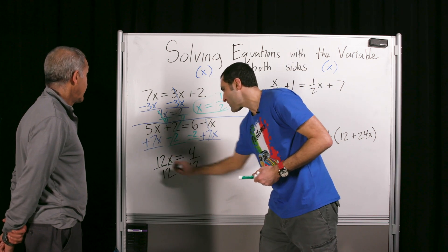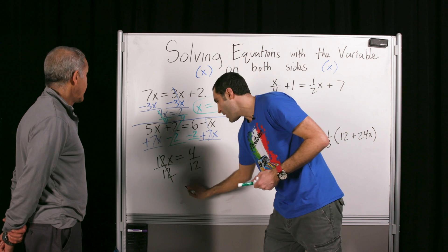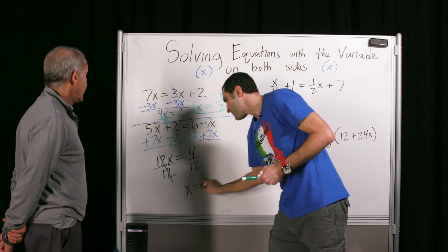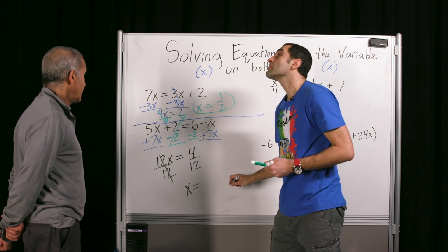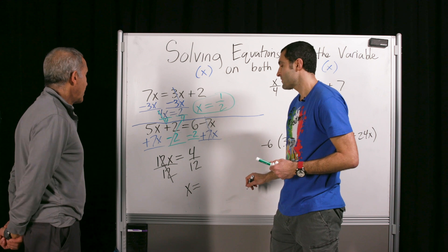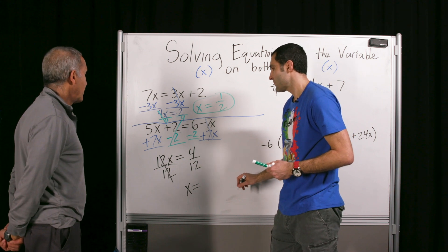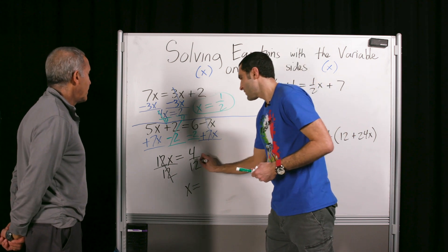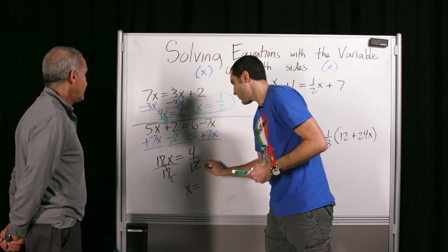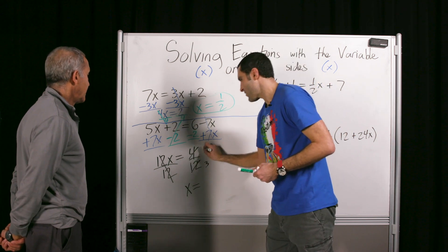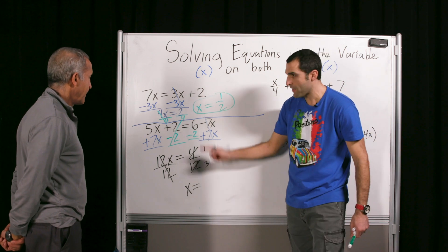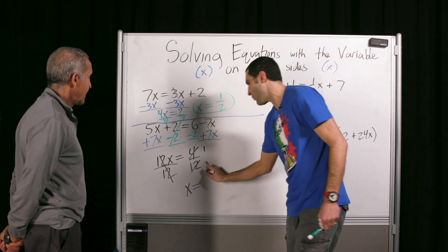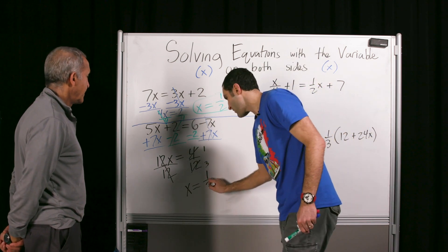And four twelfths simplifies to what? Three over four? No, try again. Divide by four. Twelve by four is three. One over three — bravo! Nice. Let's show that process: divide both top and bottom by four, and that's one-third.